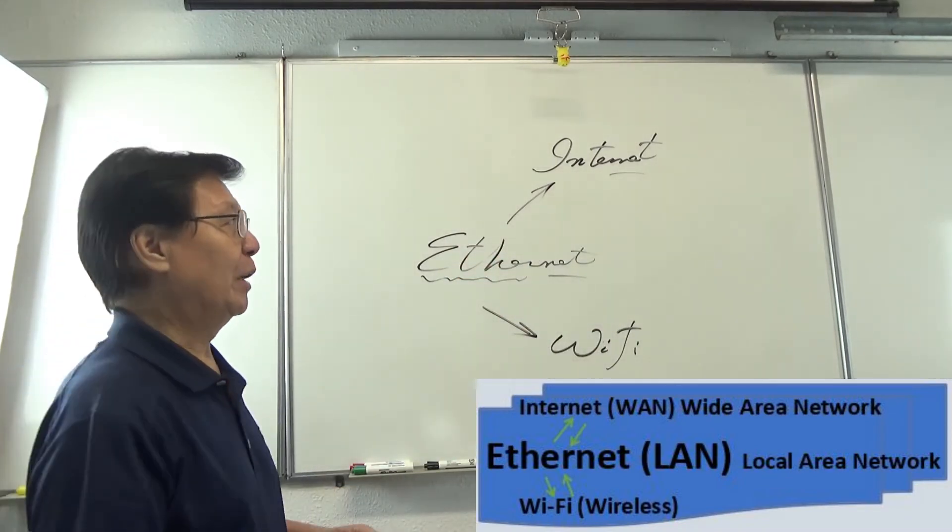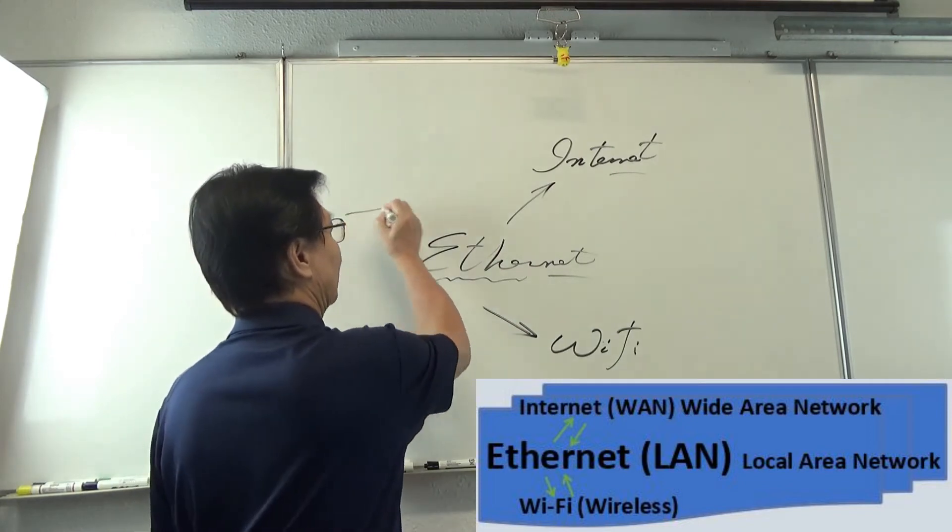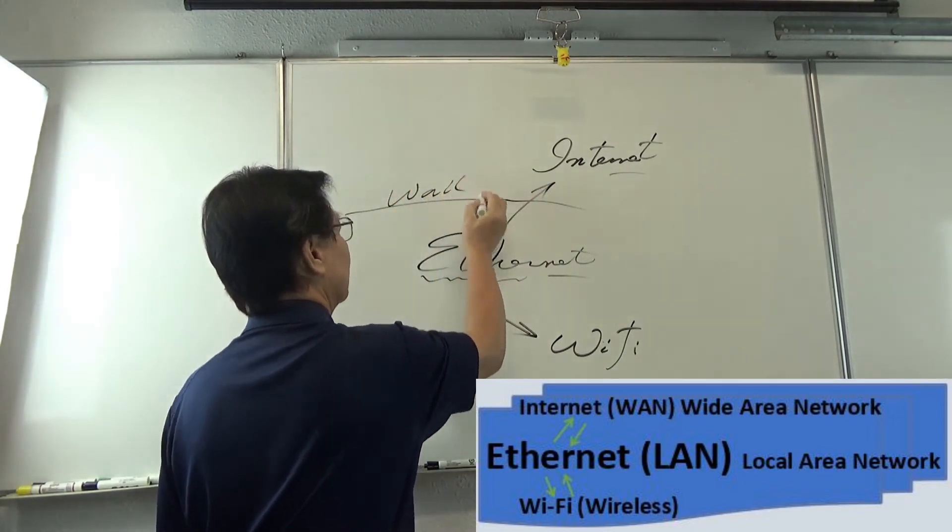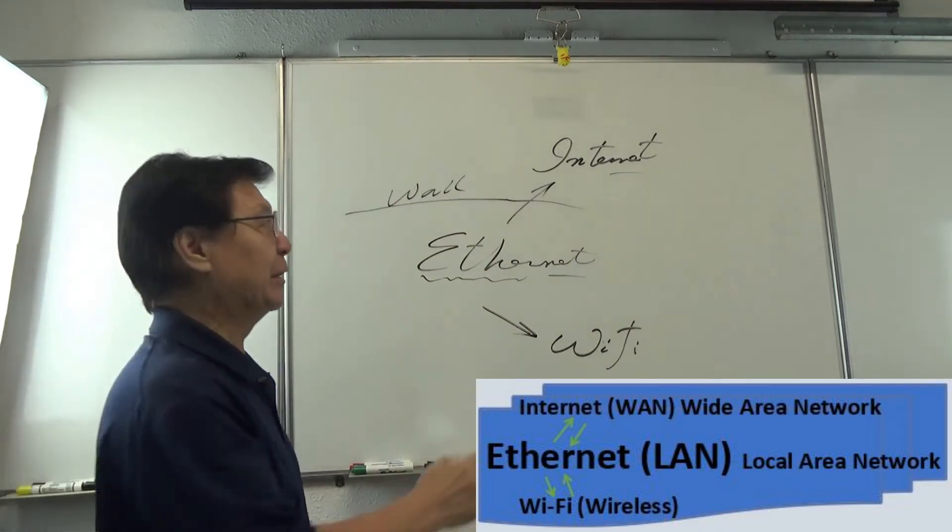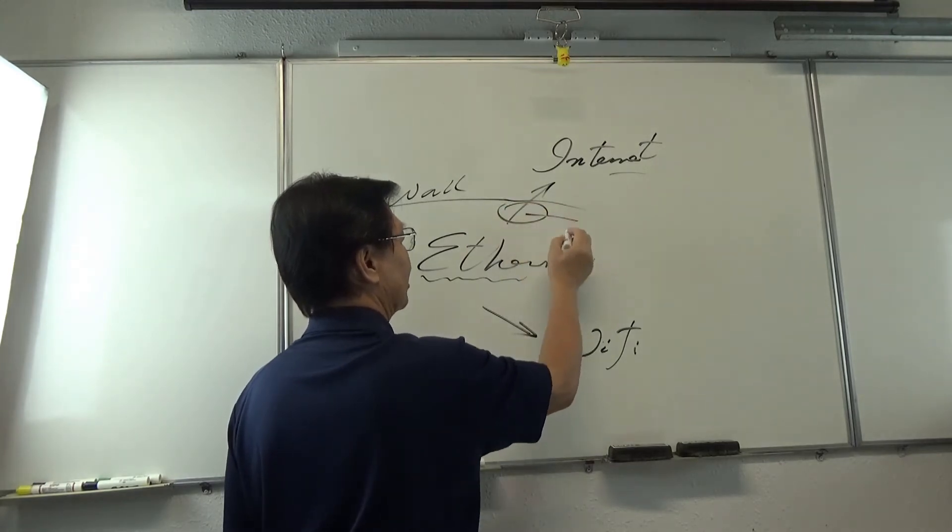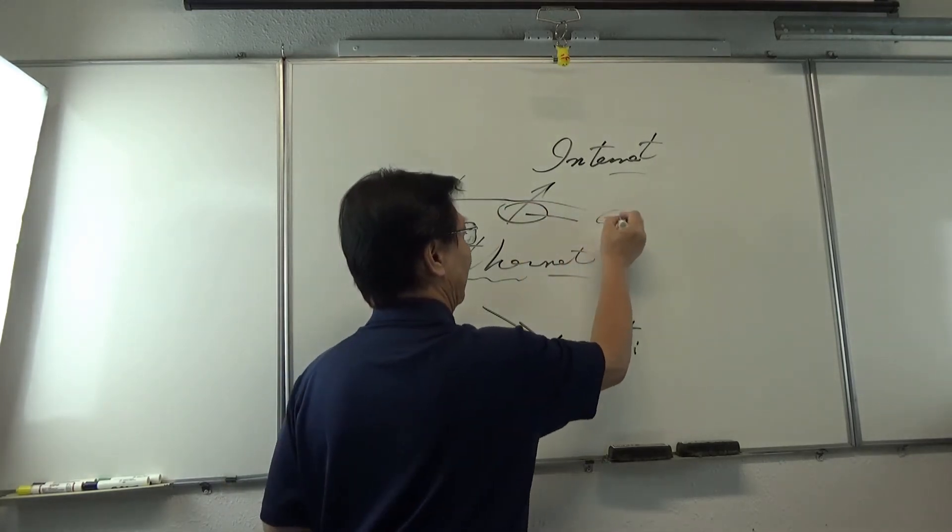So if your house, there's a house and you don't have a wall, and the Internet service provider gives you something like a box. That's a so-called gateway now.